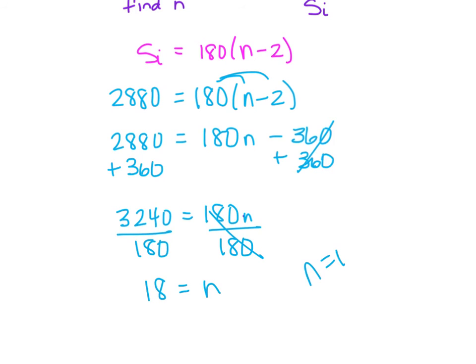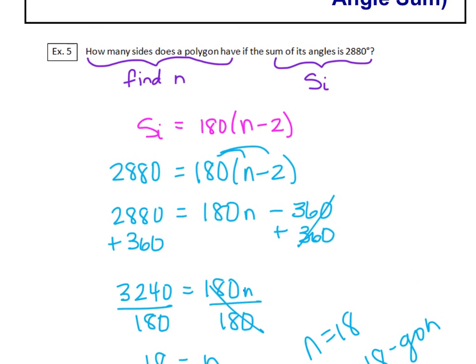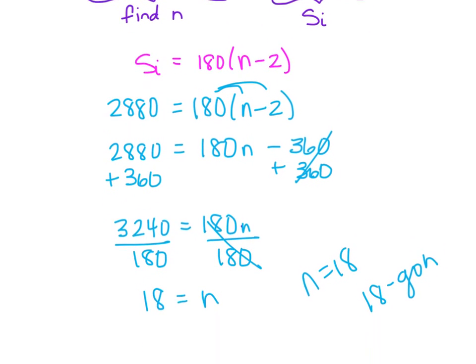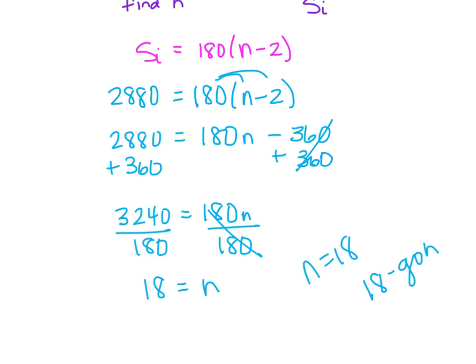So n equals 18, which makes this an 18-gon. That's what the polygon is. And let's see what the question asked us specifically: How many sides does a polygon have? So it has 18 sides.